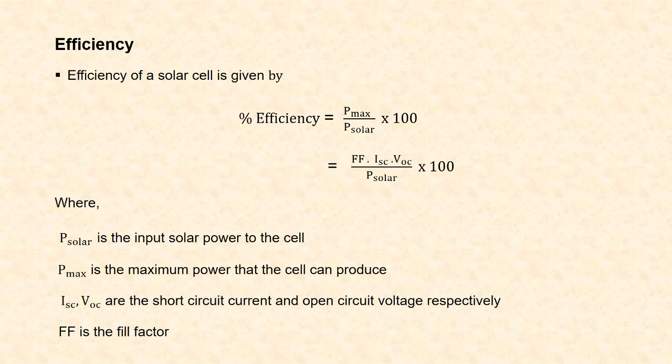Efficiency of a solar cell is given by the maximum power that a cell or array can provide divided by input solar power, multiplied by 100. It is expressed as a percentage. The maximum power the cell can provide is given by the product of fill factor, short-circuit current, and open-circuit voltage.